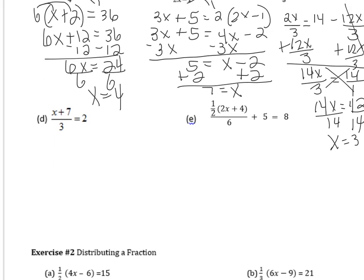This next one is all set, ready to put that whole number over 1 and cross multiply. (X + 7) times 1 is X + 7, and 3 times 2 is 6. Subtracting 7 from both sides, you get X = −1.